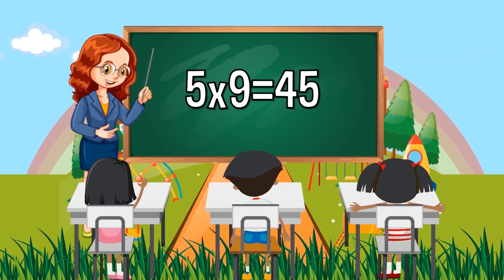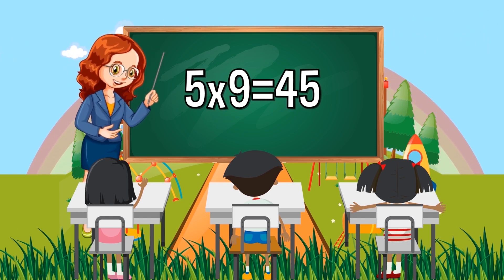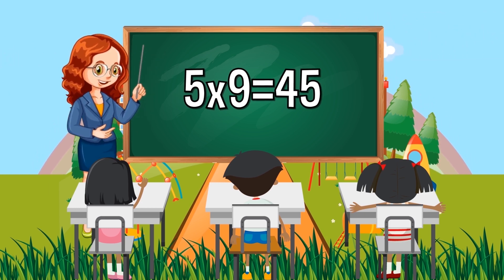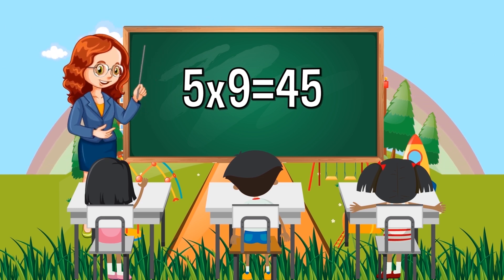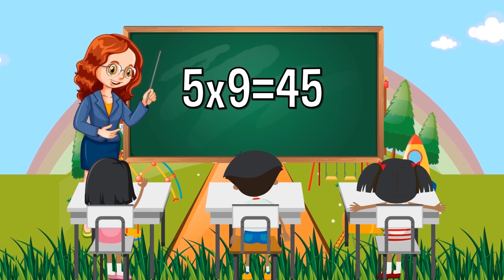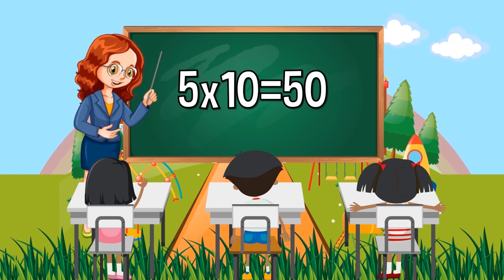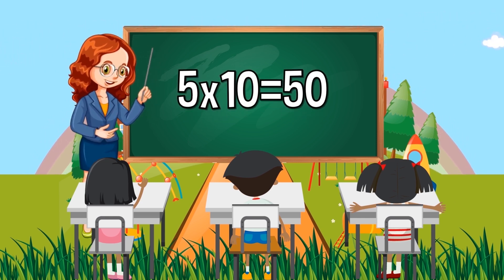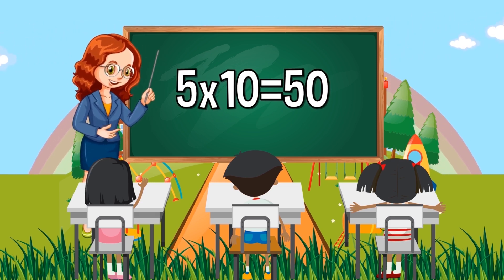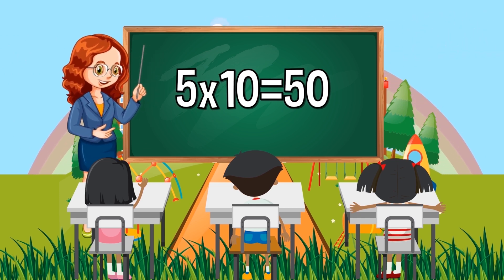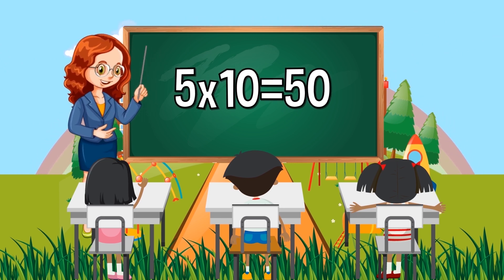5 times 9 equals 45. 5 times 10 equals 50.